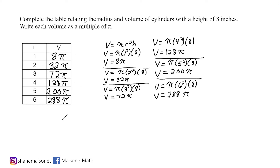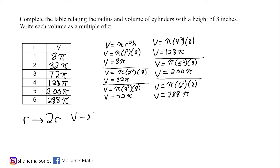So what we can say is: if we plug in any radius and end up doubling that radius, whatever the volume was before — let's call that V — is going to become 4 times whatever it was. This only occurs if you keep the height a fixed number.